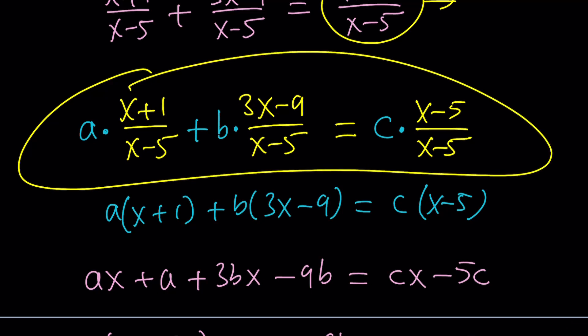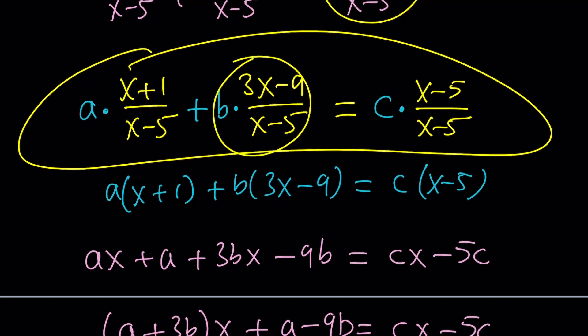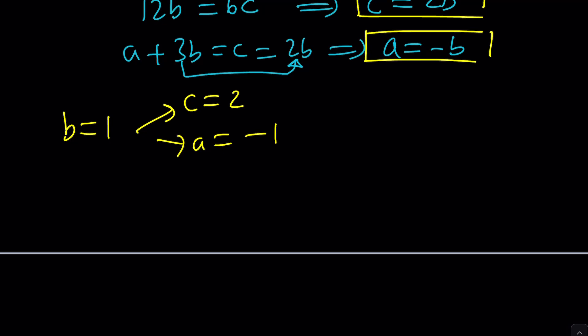All right? That's what we're going to do next. But I want to write this first because it has a positive coefficient, and that's b. So, (3x-9)/(x-5) minus, remember, a was -1, (x+1)/(x-5). Remember, it's right there. Equals c, which is 2 times (x-5)/(x-5). But, again, you don't need to worry about it because what's going to happen is if you do the subtraction, you're going to realize...